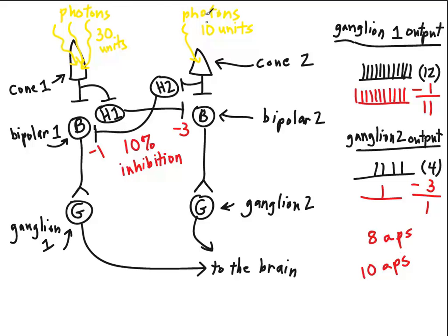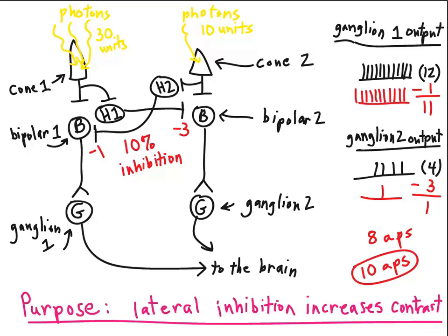Here, there's more brightness than here. Without lateral inhibition, it looked like there was only this much difference in the brightness. Lateral inhibition actually increased the amount of contrast between the two areas of brightness. The purpose of lateral inhibition, then, is to increase contrast. That increase in contrast makes it easier for our visual system to detect edges.